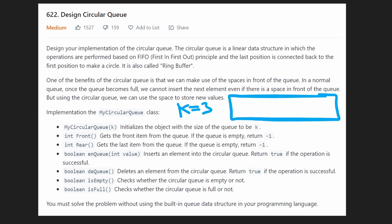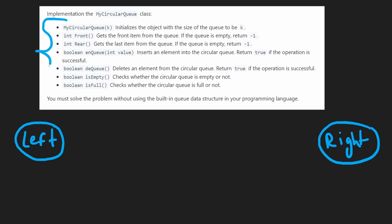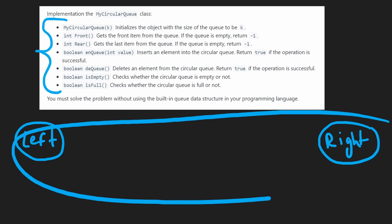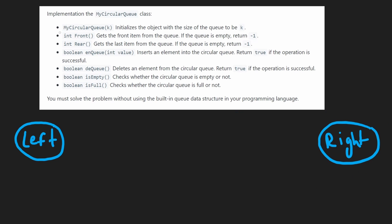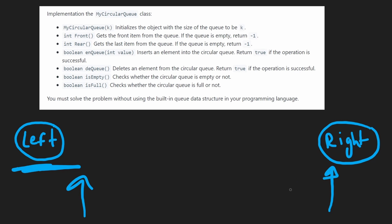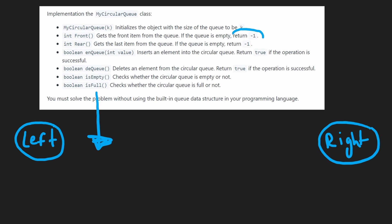Let me run through the operations we're going to implement. We initialize the circular queue with a maximum size of K. We'll have a front operation — the left side is the front of the queue, the right side is the rear. Front returns the value at the front of the queue; if none exists, we return negative one. Similarly, rear returns the value at the rear of the queue; if it doesn't exist, we return negative one.